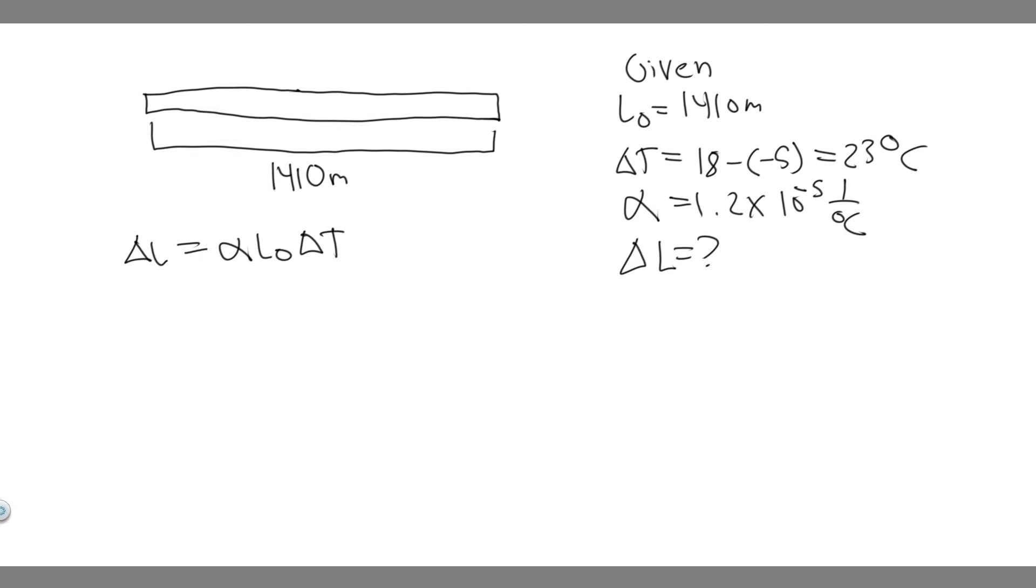And then alpha is the coefficient of thermal expansion, and it's different for every single material. But in this case, they tell us it's a steel deck. So we know we're going to be using the coefficient of thermal expansion of steel, which if you look in your textbook, there should be a table. And you're going to get the value 1.2 times 10 to the minus 5. Keep in mind the units are inverse degrees Celsius.